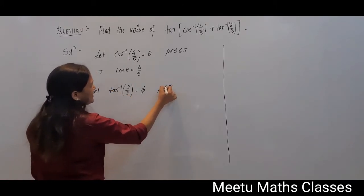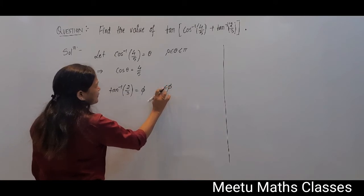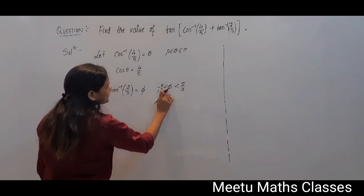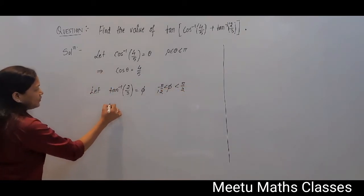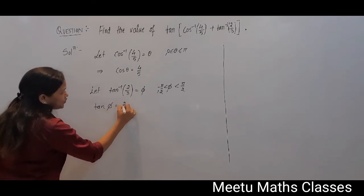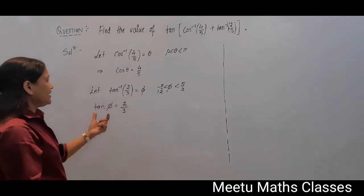Phi can be from minus pi by 2 to pi by 2. Now tan of phi will be equals to 2 by 3.